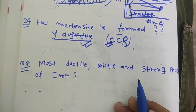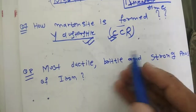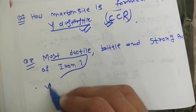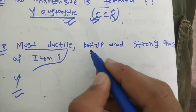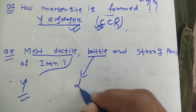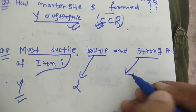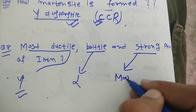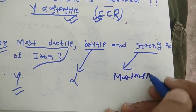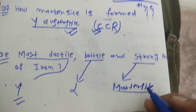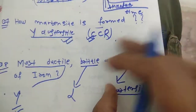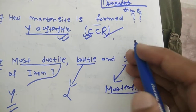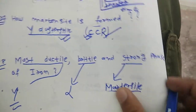The most ductile phase of iron is gamma austenite. The most brittle phase of iron is alpha ferrite. The most strong and hardest phase is martensite, because martensite is obtained at or greater than the critical cooling rate — doing this kind of critical cooling gives you the strongest and hardest phase.